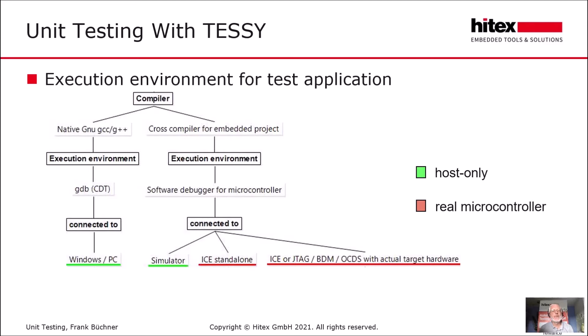If you use a cross-compiler, you need an execution environment that allows TESI to execute this binary. Usually TESI uses the software debugger of your embedded project as the execution environment. This software debugger can act as an instruction set simulator, allowing you to execute tests without actual target hardware. Or it can act as an interface to an in-circuit emulator, or as an interface to a hardware debug device — a JTAG debugger or similar — connected to the actual target hardware.